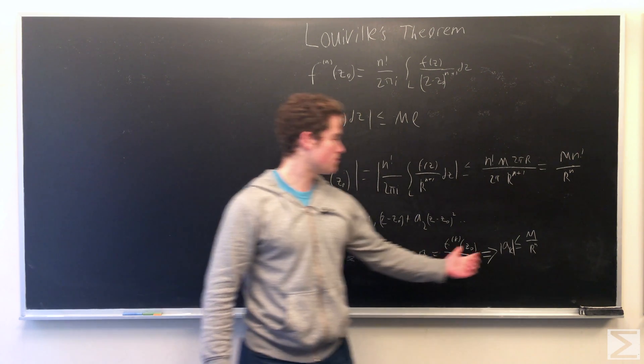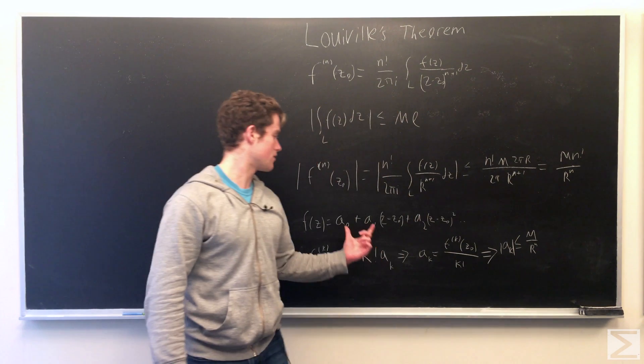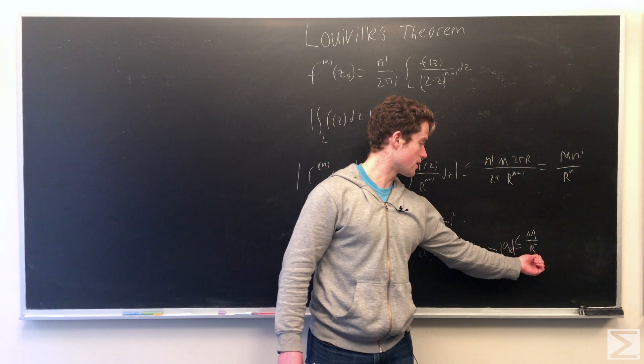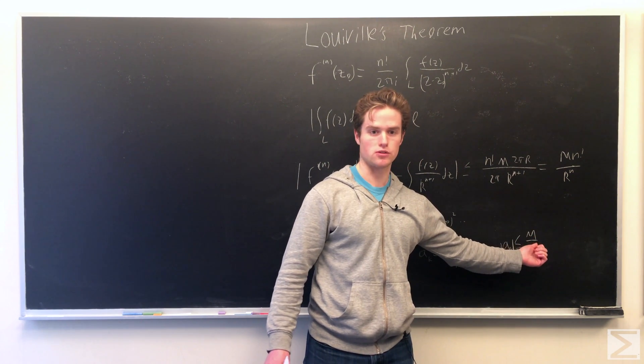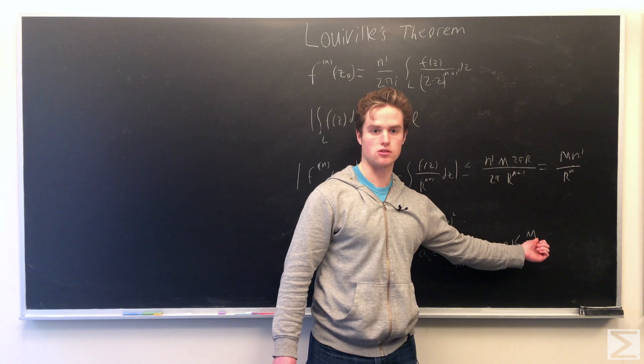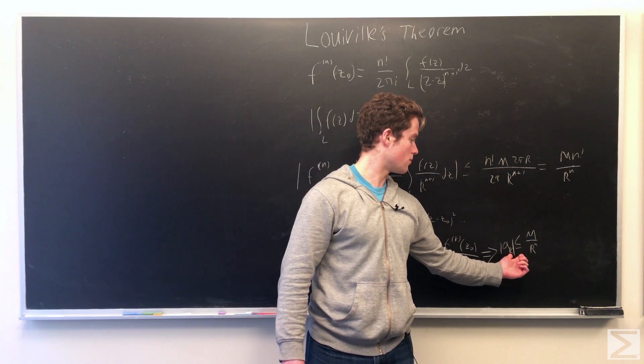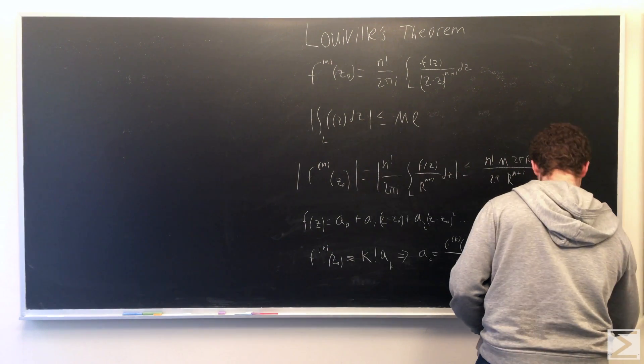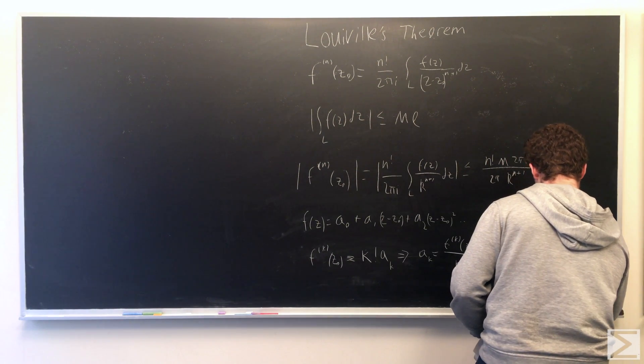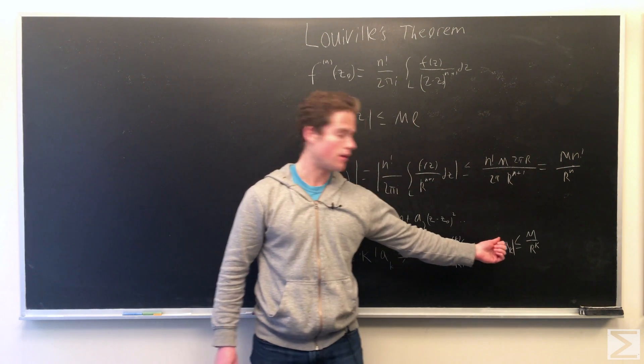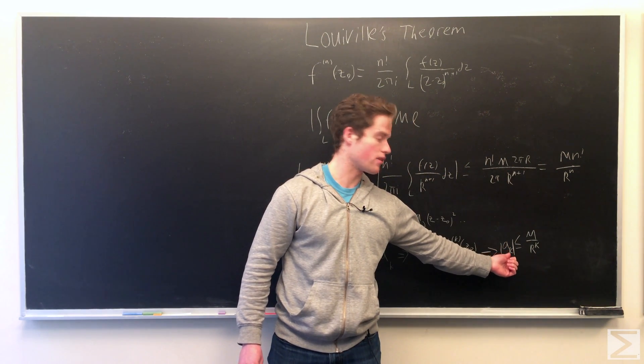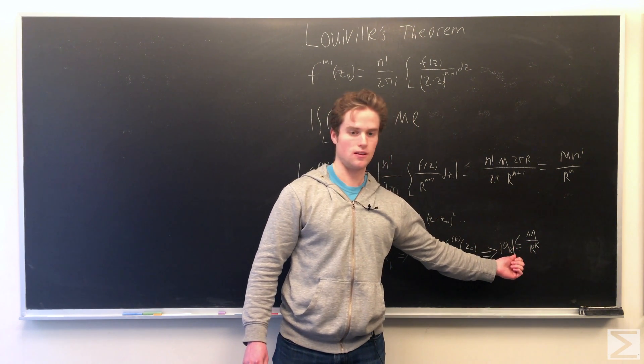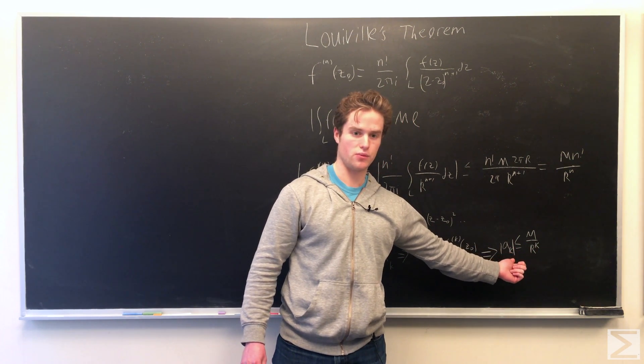And so we can see that here, because if our power series is valid for the entire finite plane, we can let r go to infinity. We also assume our function is bounded, so M is some number, doesn't go to infinity. So any aₖ where we have k greater than or equal to 1, as r goes to infinity, this goes arbitrarily small. And so the modulus of any aₖ, k ≥ 1, must be 0.